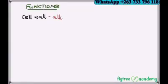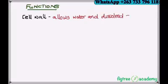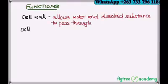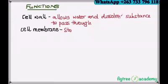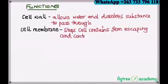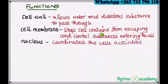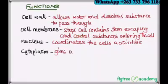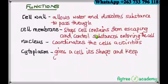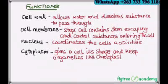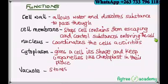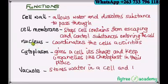The cell wall allows water and dissolved substances to pass through it. Then we have the cell membrane, which stops cell contents from escaping — so the liquids and organelles inside the cell cannot escape — and it also controls substances entering the cell.